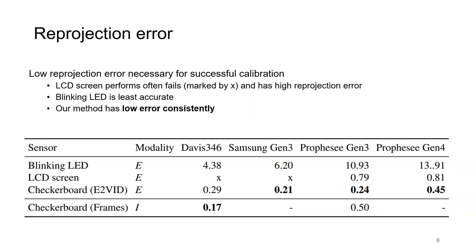Our proposed method has a consistently low RMSE. Only the Davis frames report a lower reprojection error overall. Compared to our method, the LCD screen RMSE is at least two times higher or even fails. The blinking LED calibration pattern is the least accurate in our experiments.